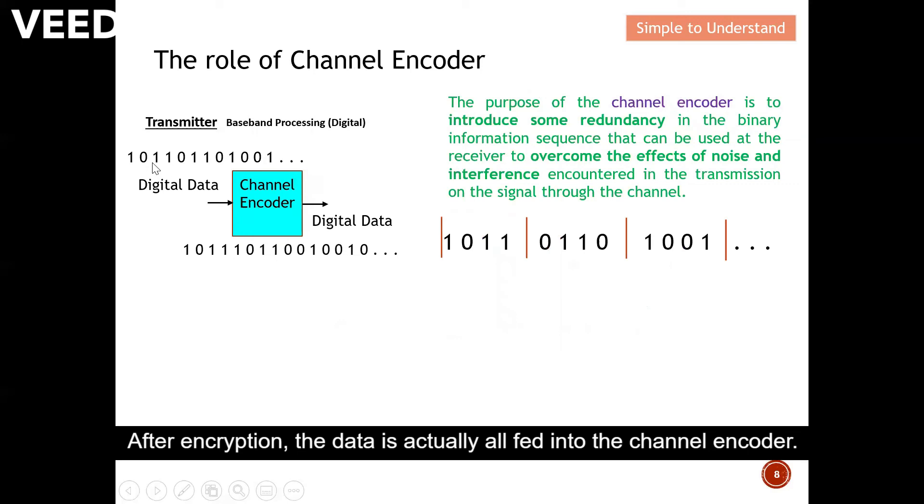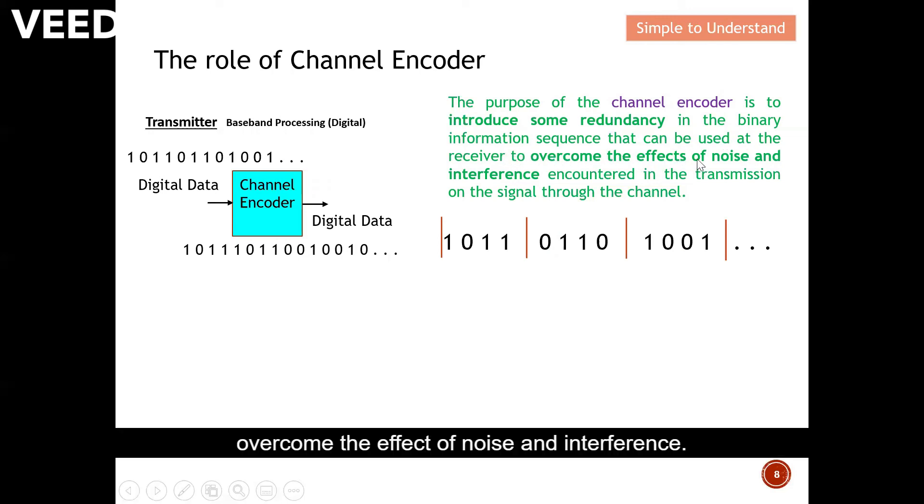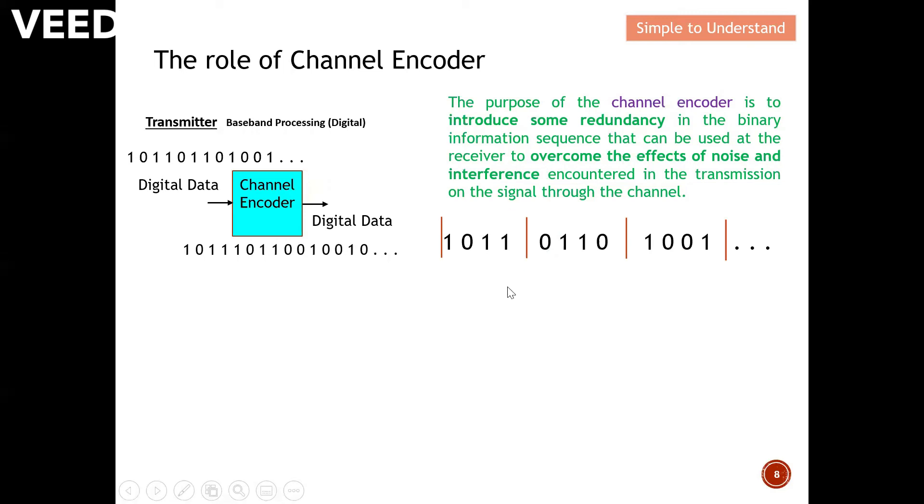After encryption, the data is actually all fed into the channel encoder. At the output of the channel encoder, this will be the string of data. You probably sense that there are increased numbers of bits at the output of the channel encoder. The purpose of the channel encoder is to introduce some redundancy in the binary so that they can be used at the receiver to overcome the effects of noise and interference.